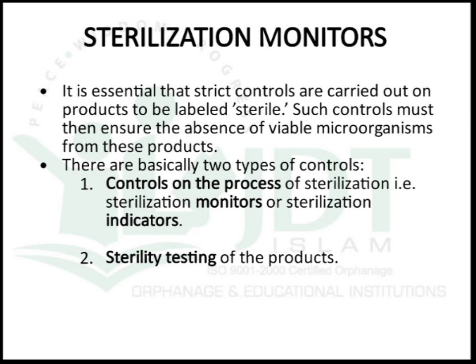In order to assure sterilization, we can use two types of controls: control on the process of sterilization using sterilization monitors or sterilization indicators, which produce a color change or other result confirming the process; and sterility testing, where a sample from the sterilized product is placed in suitable culture media and incubated. Any turbidity or growth indicates failure of the sterilization process.